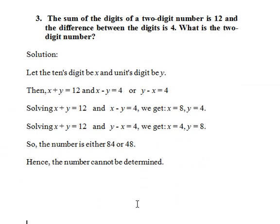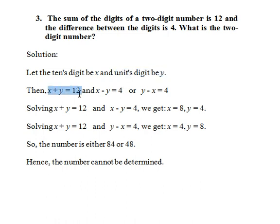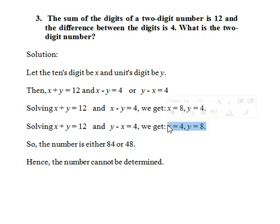Third question. The sum of the digits of a two-digit number is 12 and the difference between the digits is 4. What is the two-digit number? We assume the tens digit to be x and units digit to be y. So x plus y equals 12, and the difference gives either x minus y equals 4 or y minus x equals 4. Solving both cases gives x equals 8, y equals 4 or x equals 4, y equals 8. So the number is either 84 or 48; hence the number cannot be determined.